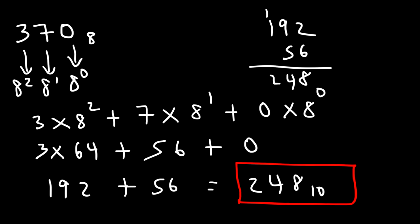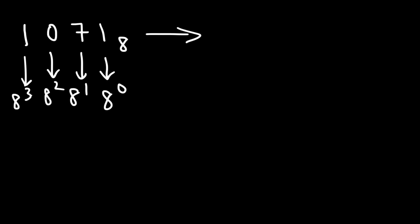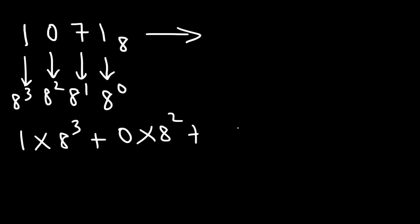So that's how we can convert an octal number into a decimal number. Now let's try another example: 1071 in the octal system. The first 1 we're going to multiply by 8 to the 0, then the 7 by 8 to the first power, the 0 by 8 squared, and the 1 by 8 to the third. So this is going to be 1 times 8 to the third plus 0 times 8 squared plus 7 times 8 to the first power plus 1 times 8 to the 0 power.